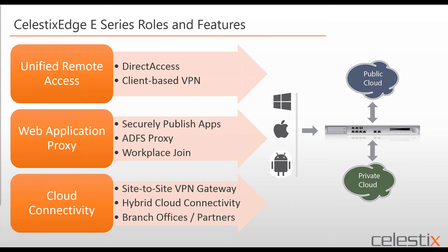From our Celestix Edge E-Series roles and features, I put them into three discrete buckets similar to UAG. The first is unified remote access — providing an enhanced direct access experience like UAG, as well as traditional client-based VPN: IPsec VPN, IKEv2, or SSTP (Secure Socket Tunneling Protocol) for Windows clients. Direct access is essentially an always-on VPN solution, while client-based VPN handles alternate, down-level, or unmanaged legacy systems.